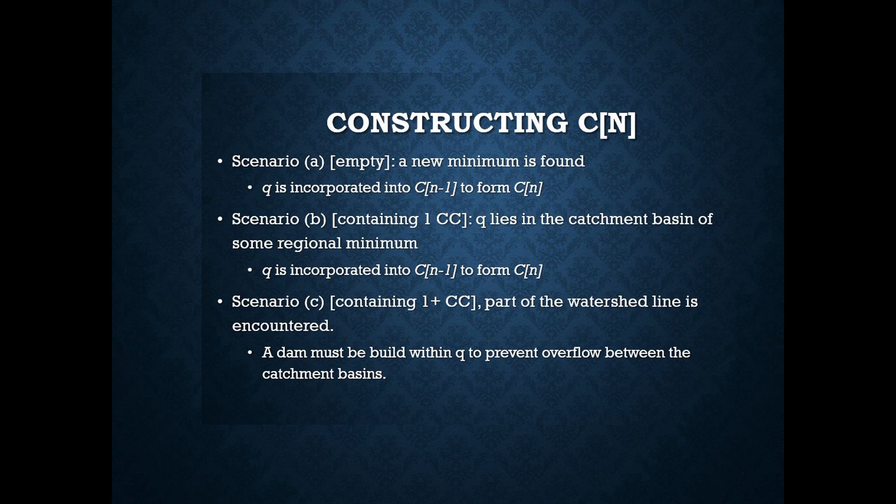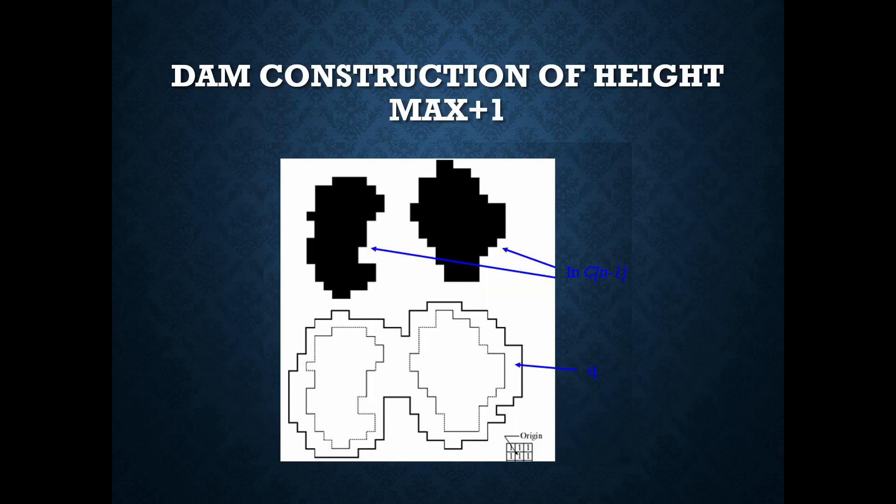Q lies in the catchment basins of some region minimum. Q is incorporated into C of M-1 to form C of M. Scenario C, the third scenario where it will be containing more than one corpus callosum. The part of the watershed line is encoded. A dam must be built within Q to prevent overflow between the catchment basins.